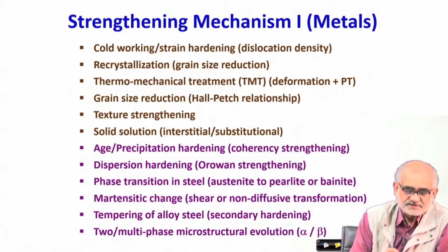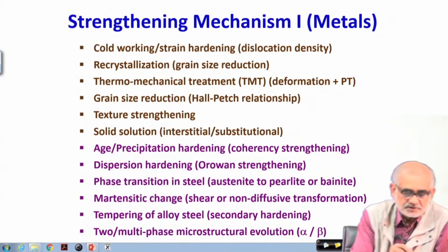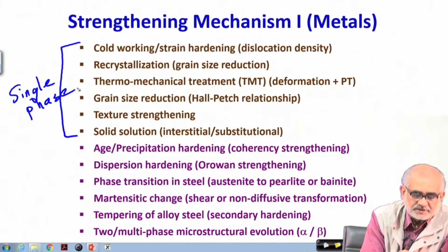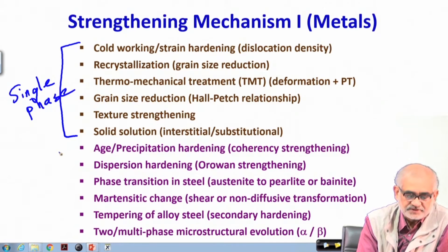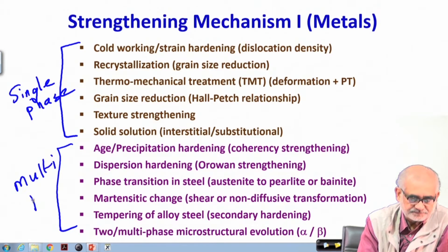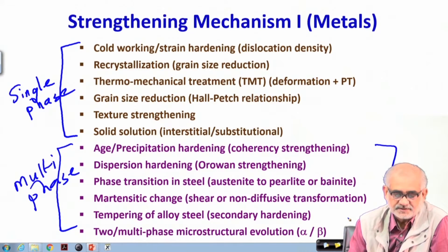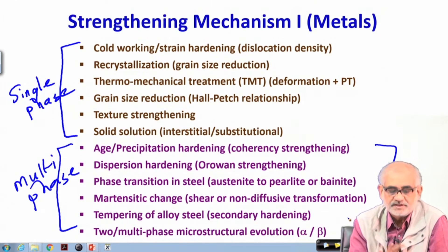The two color codes here essentially mean that the first set of strengthening mechanisms is typically applicable to single-phase materials — metals and alloys which remain single phase regardless of composition and do not undergo typical phase transformations such as invariant transformations. The remaining set of strengthening mechanisms is meant for two-phase or multiphase materials. Of course, single-phase strengthening mechanisms can also be applied to two-phase or multiphase materials to some extent.